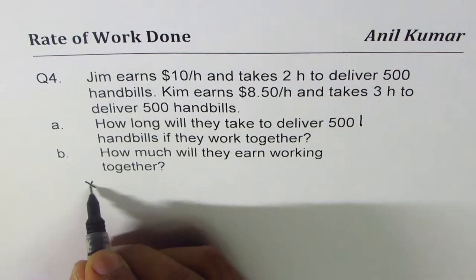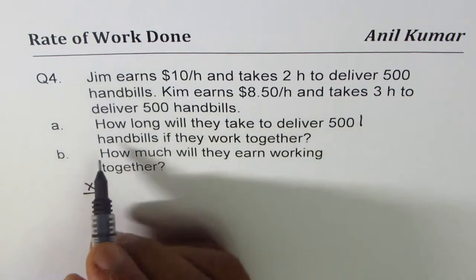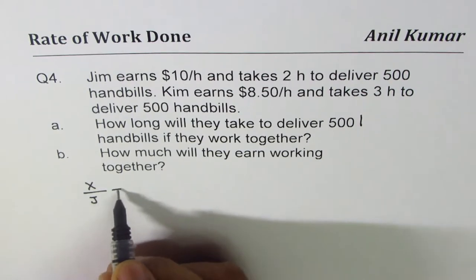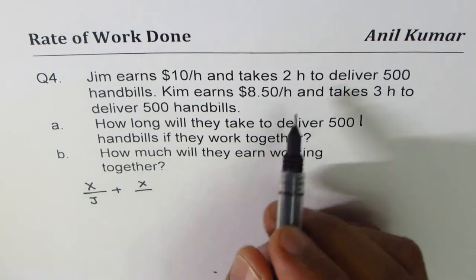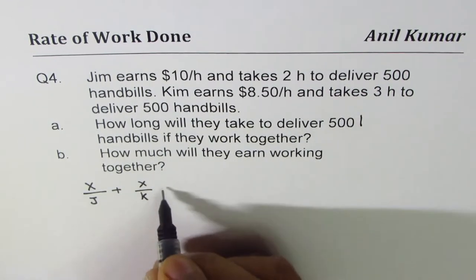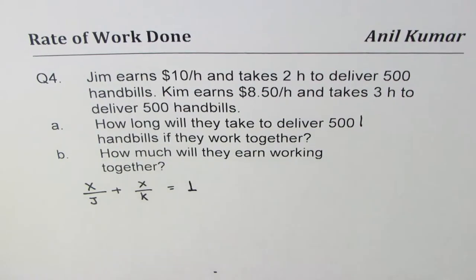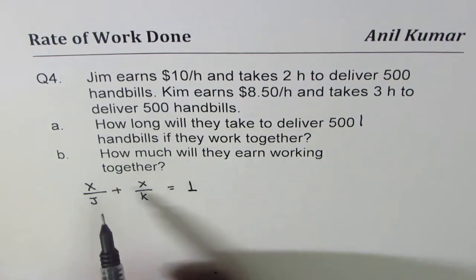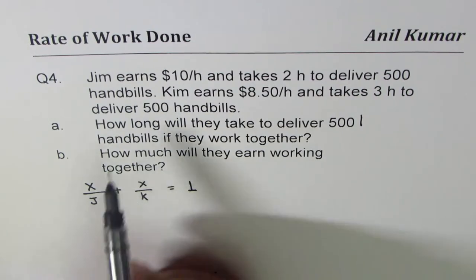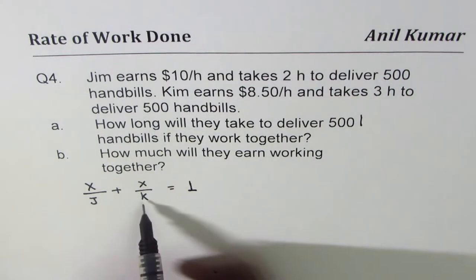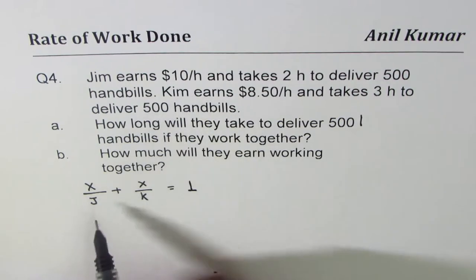For it, we know the equation is x over one variable, in this case Jim j, plus x over the other guy who is Kim, we say k. The whole job equals one. This is the standard equation which we have come with as discussed in previous three examples, where j is the rate at which Jim works, k is the rate at which Kim works. So what is j?